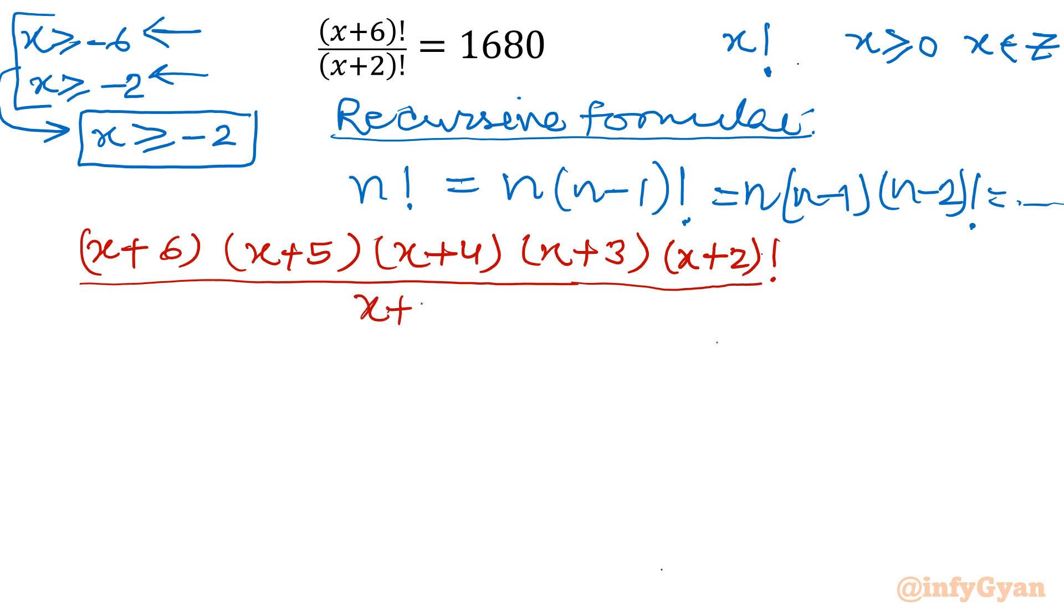Denominator is (x+2)!. Now one quartic equation is about to come 1680. I will cancel these two terms immediately.